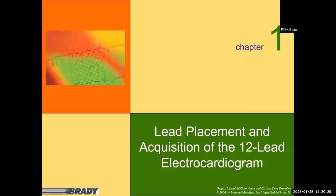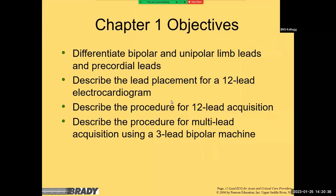Chapter one has four primary objectives: differentiate between bipolar, unipolar, and precordial leads; describe lead placement for a 12-lead; describe the procedure for 12-lead acquisition; and describe the procedure for multi-lead acquisition using a three-lead bipolar EKG machine. That last one is especially important because sometimes your EMT partner cuts through your V-leads during trauma assessment. You can still do a 12-lead if you use it in three-lead mode and move your left leg lead.